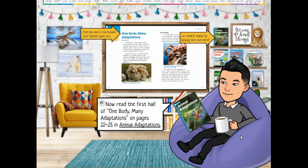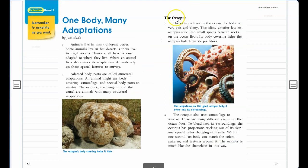Okay, that's what we're talking about. The first half of One Body, Many Adaptations, on pages 22 to 25 in Animal Adaptations. All right, so let's go ahead and read those. Extended Read 2. Remember to annotate as you read.